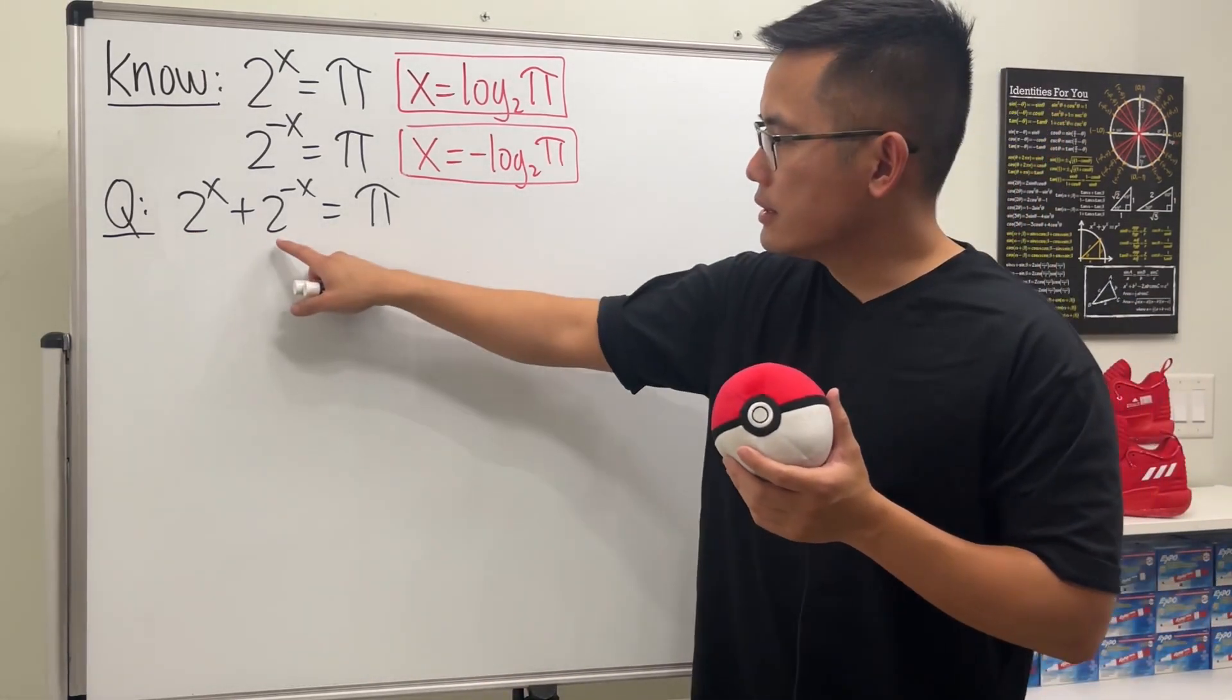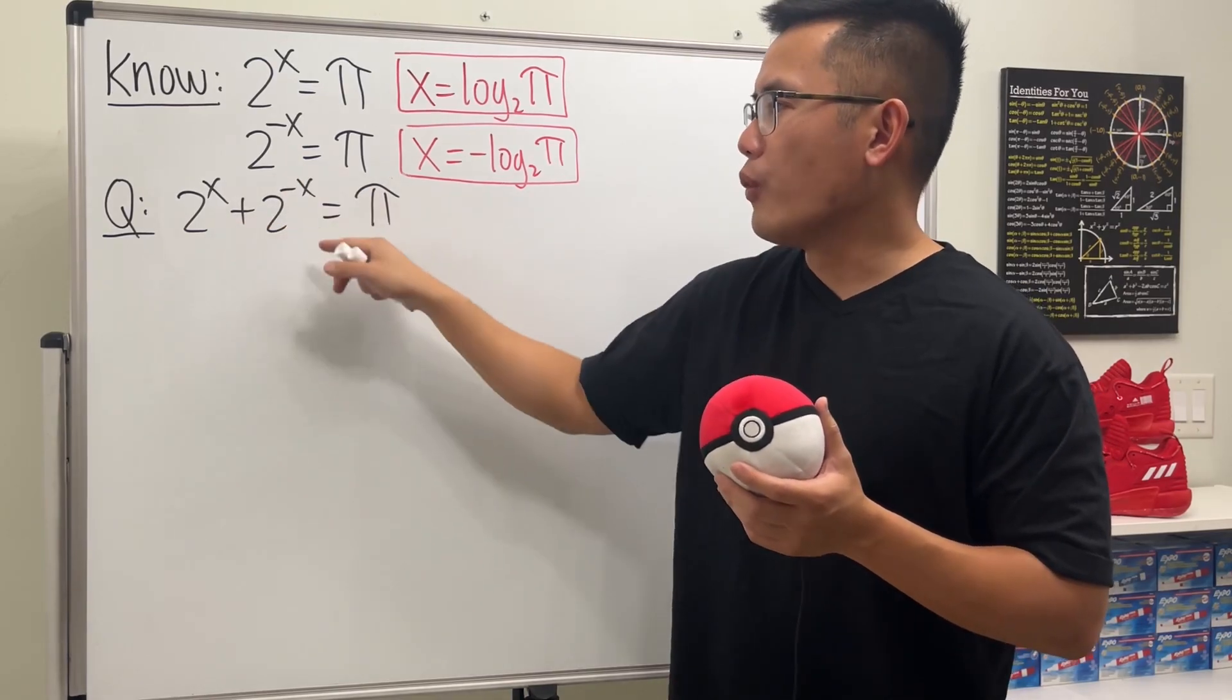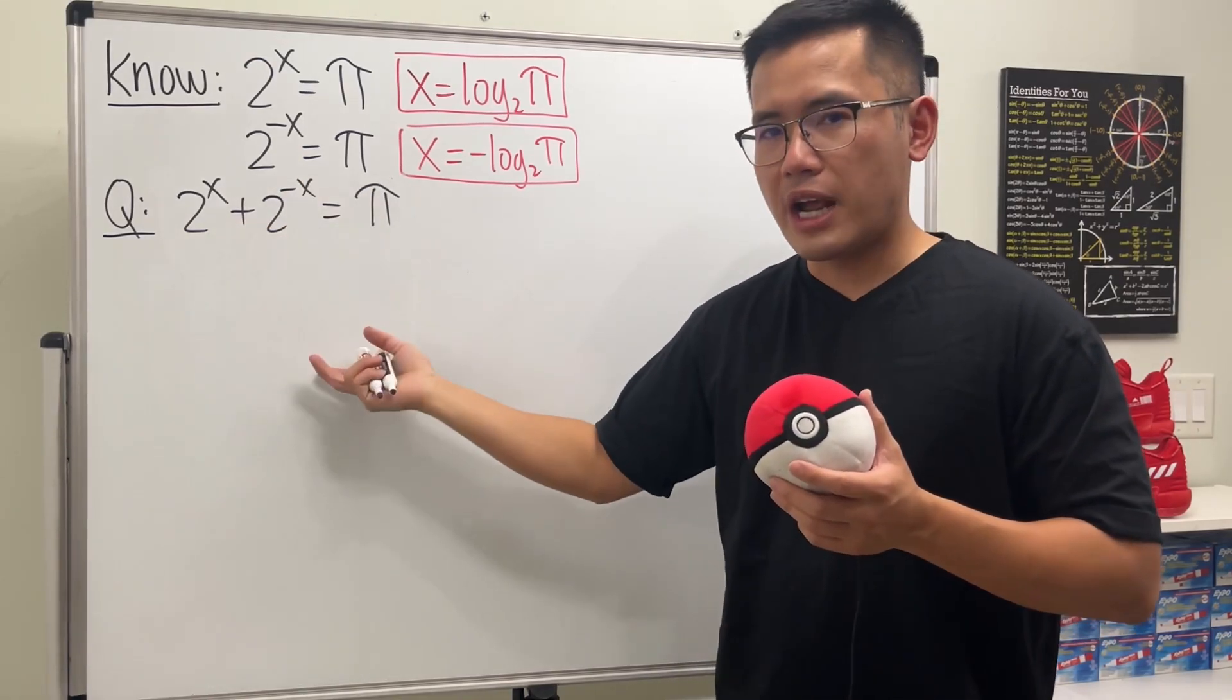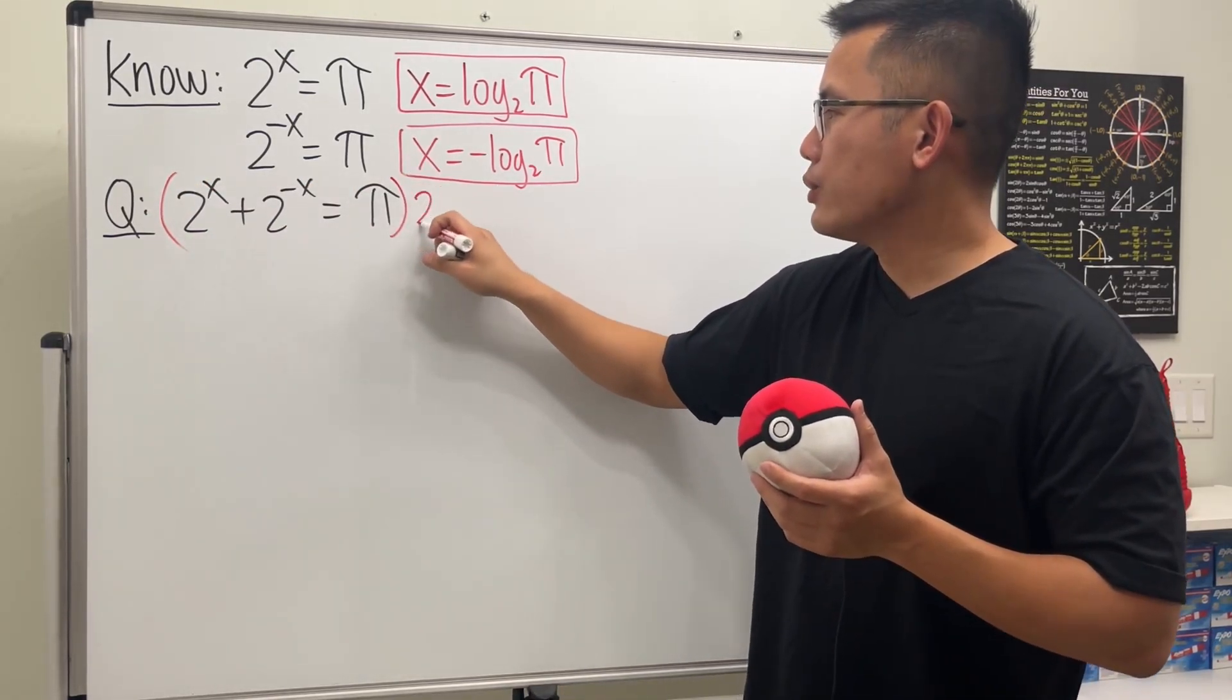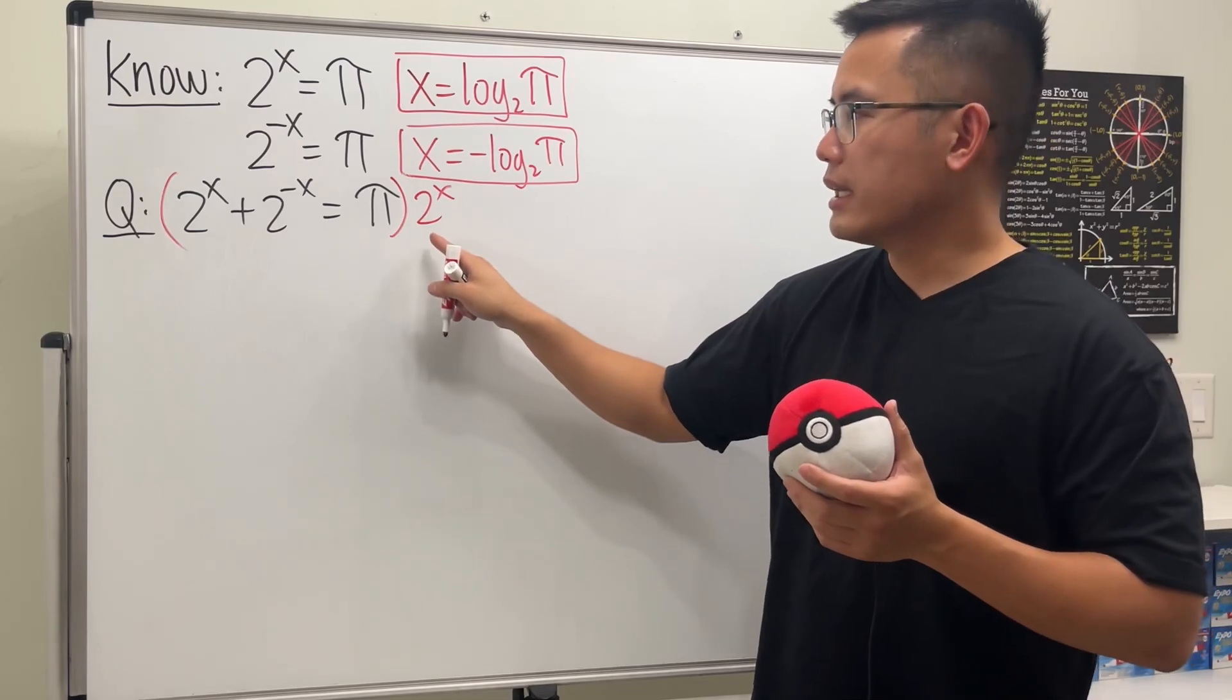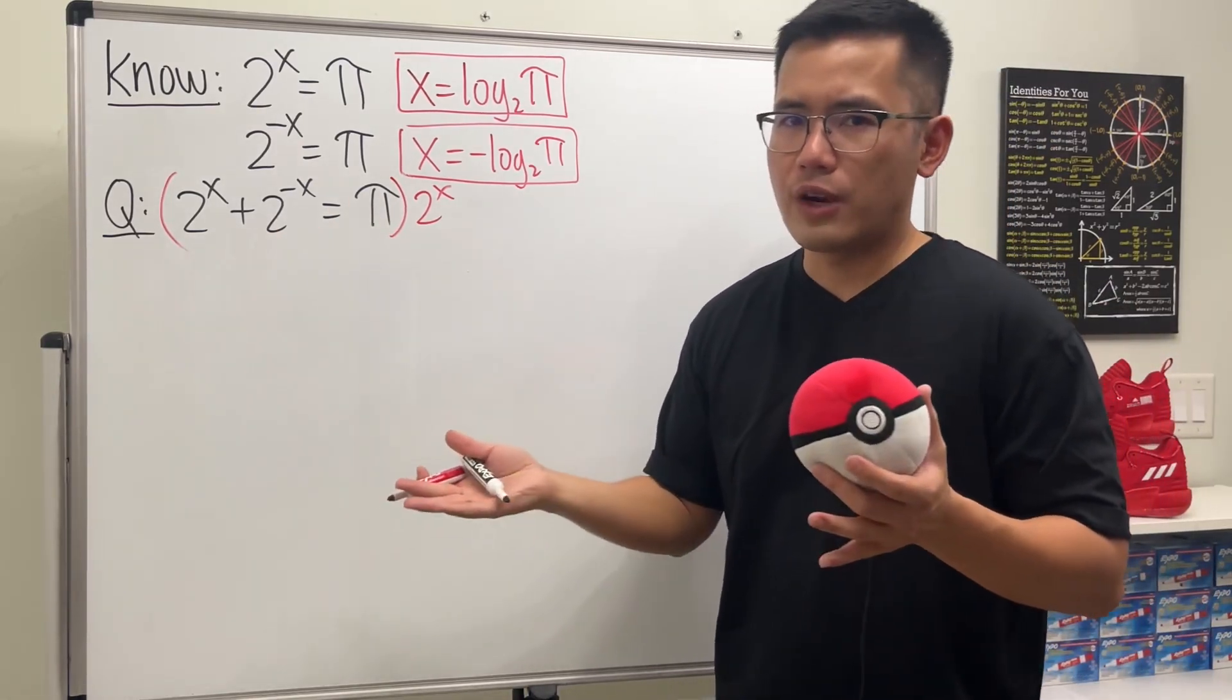Well, this is 2 to the negative x, which is the same as 1 over 2 to the x, right? So it's a fraction. So what we can do is just multiply everybody here by 2 to the positive x. So that this term will just be 1, so we don't have fractions anymore.